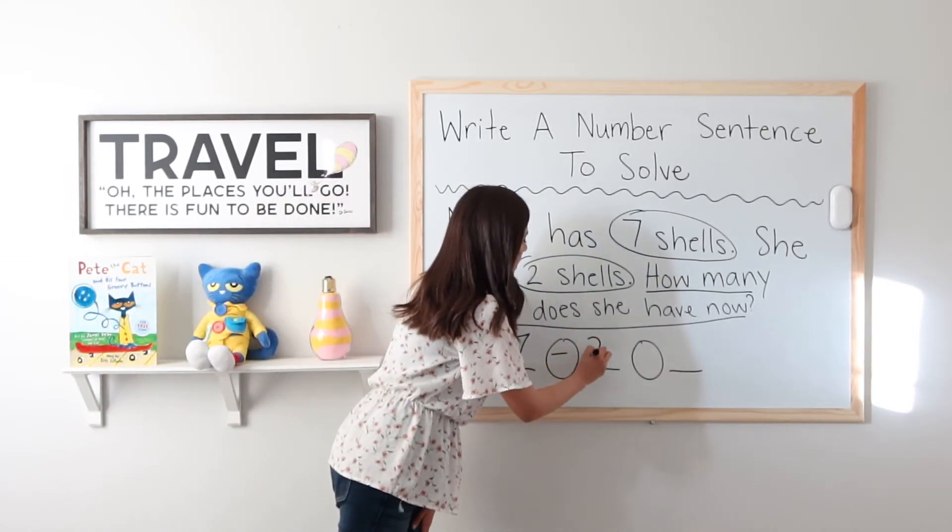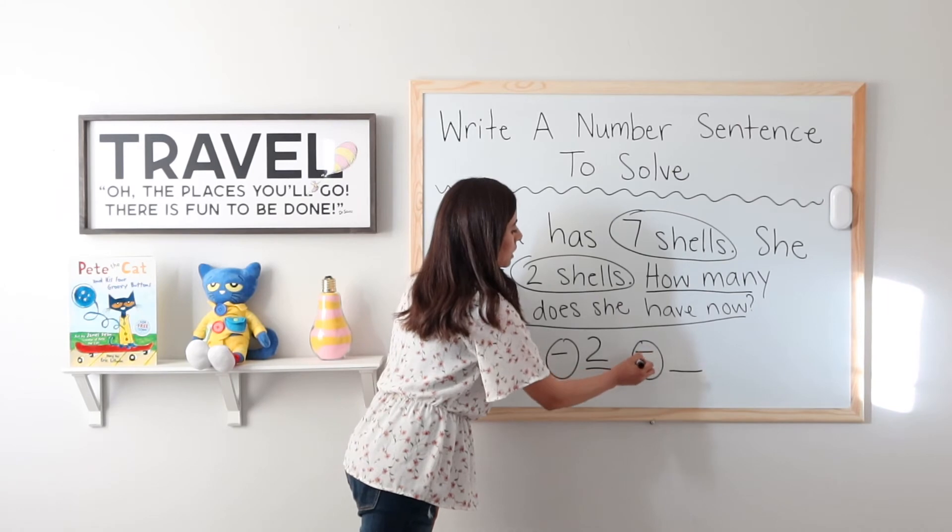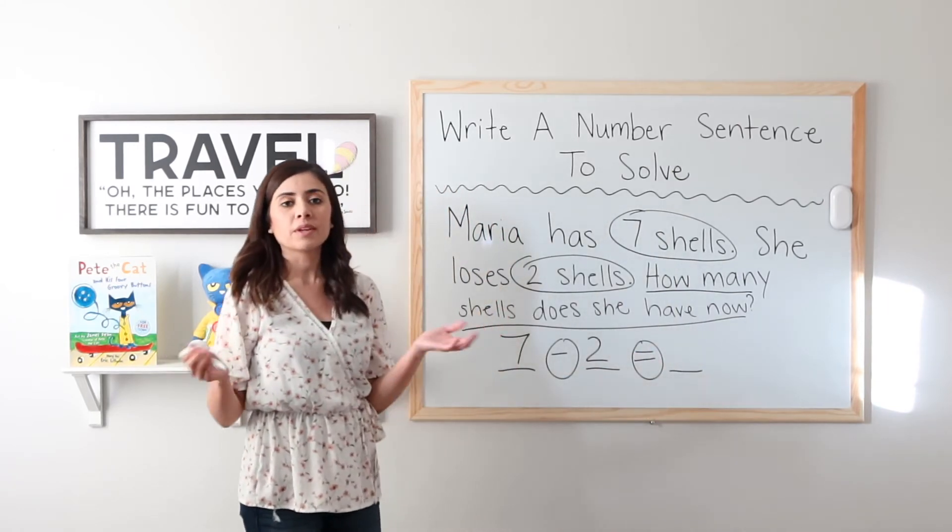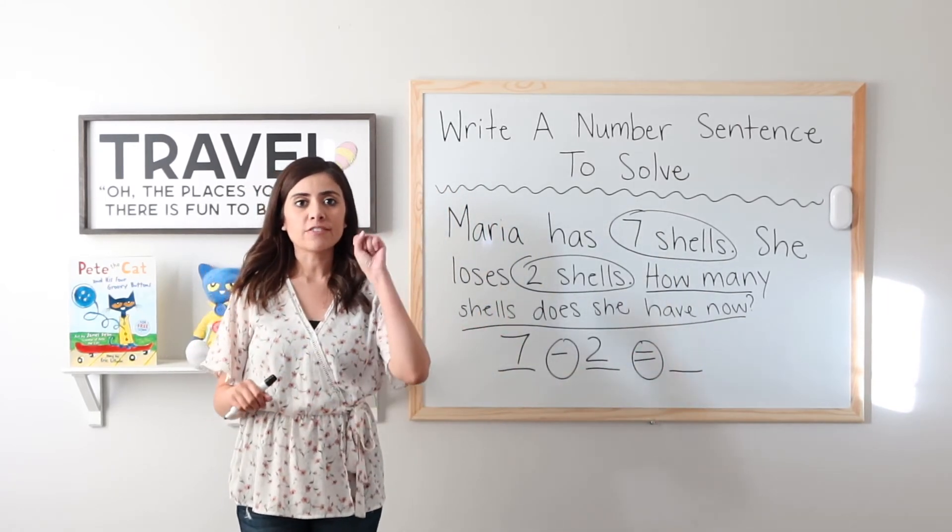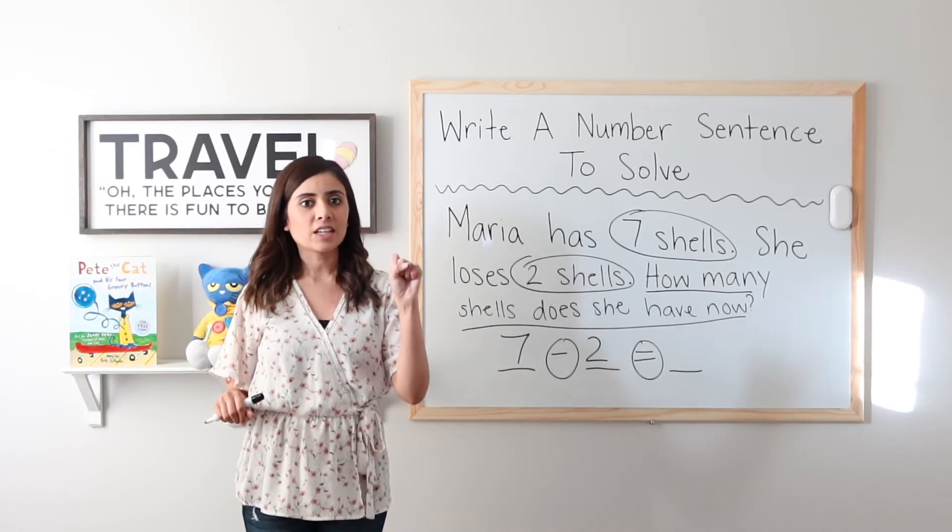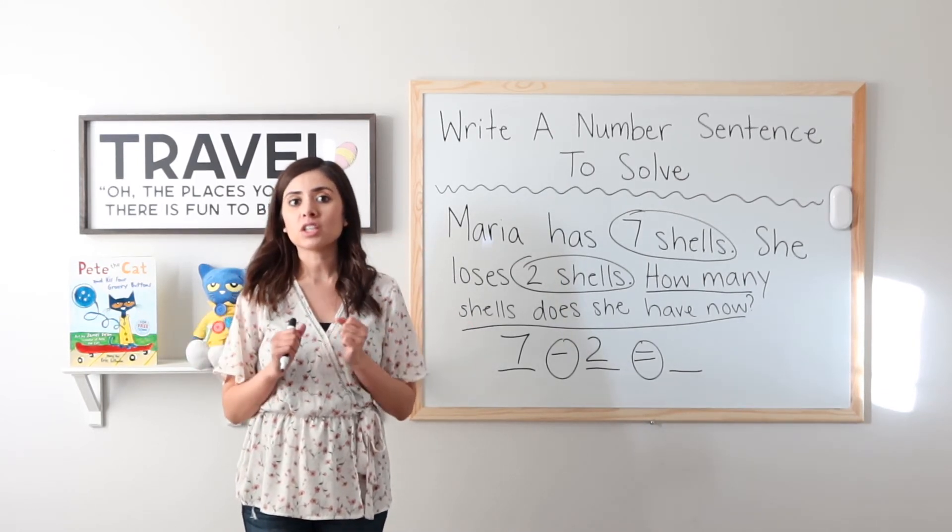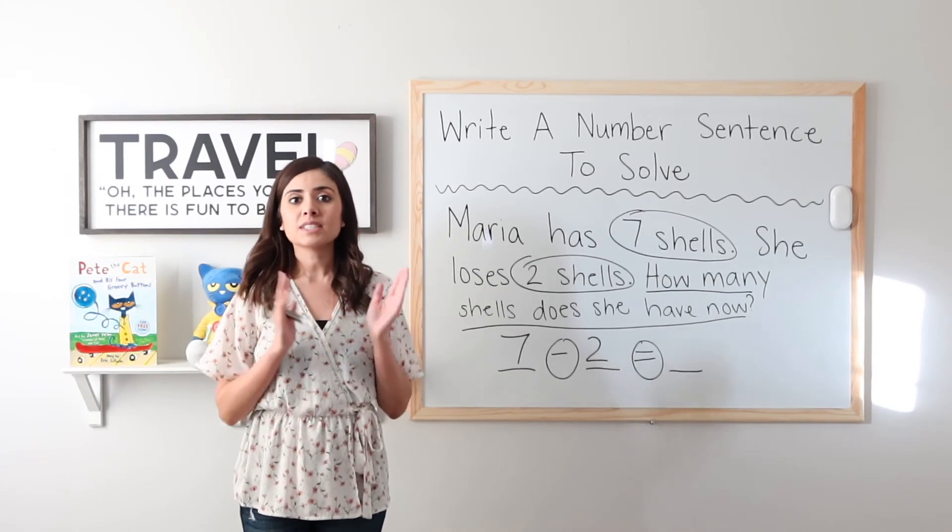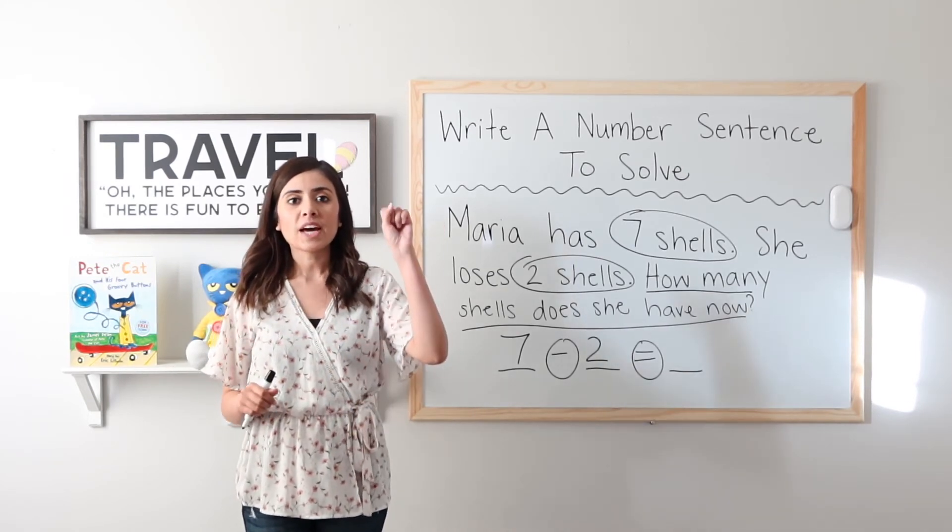Seven minus two equals what? Seven. Let's go ahead and hold a fist and say two. We will jump up until we say seven and see how many fingers it took to get from two to seven. Ready? Go ahead and do this with me.